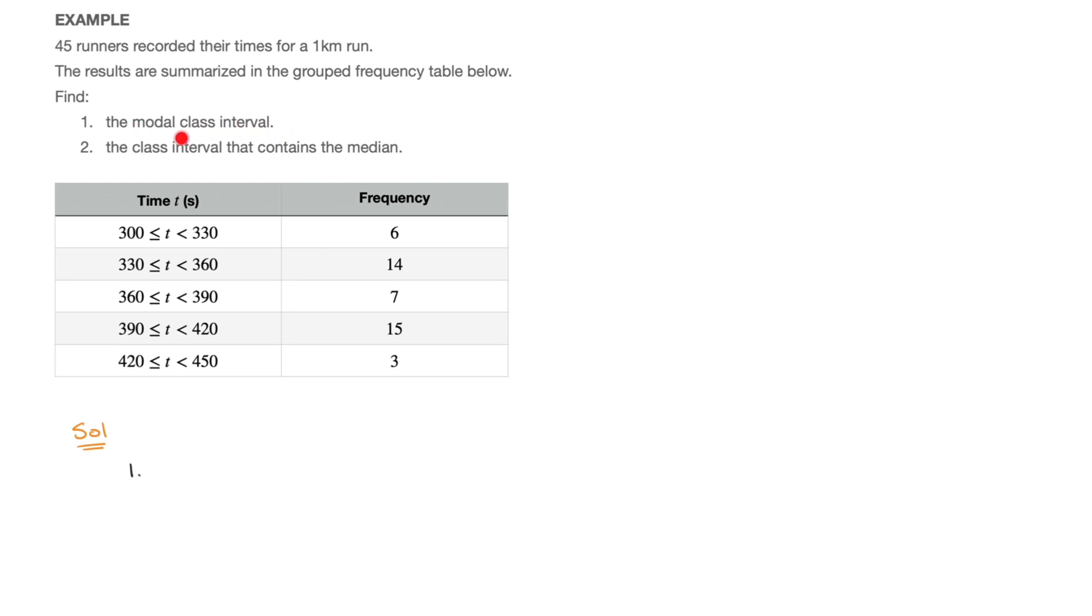Put simply, the modal class interval is the interval which has the highest frequency. So, looking at our grouped frequency table here, we quickly notice that the highest frequency we have is 15, which tells us that 15 out of the 45 runners took between 390 and 420 seconds to complete a 1 km run. And since 15 is greater than all the other frequencies, that makes the interval 390 to 420 the modal class interval.